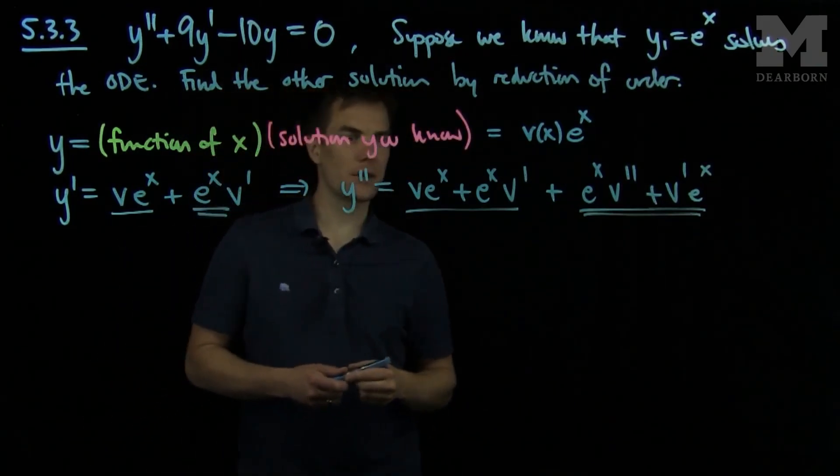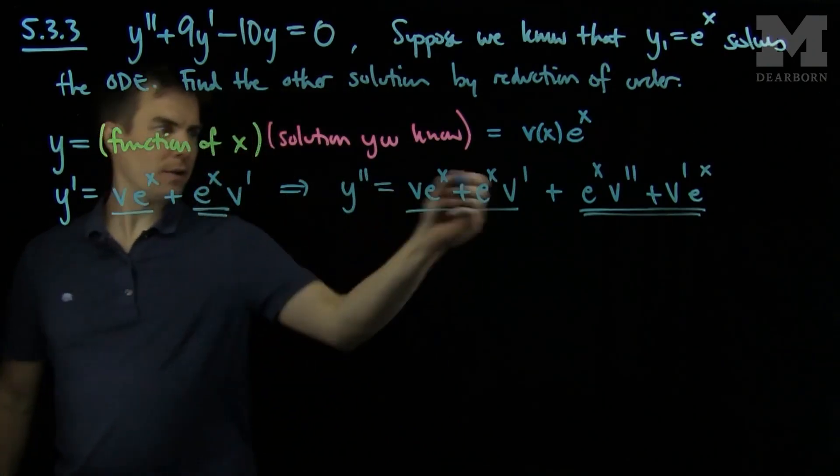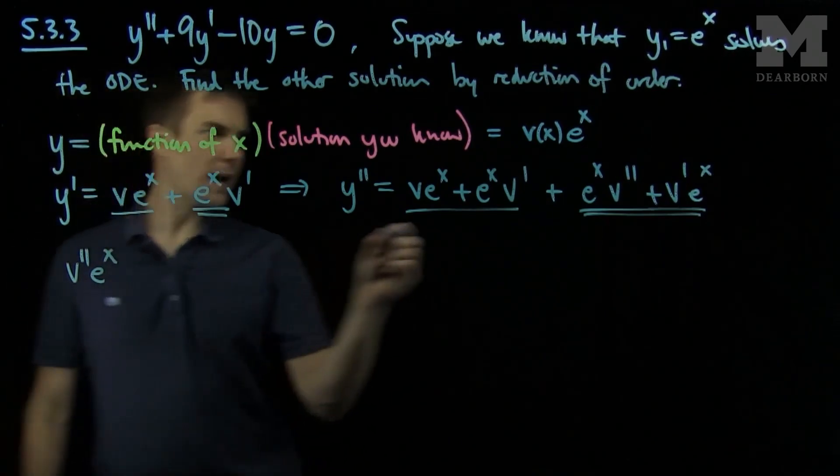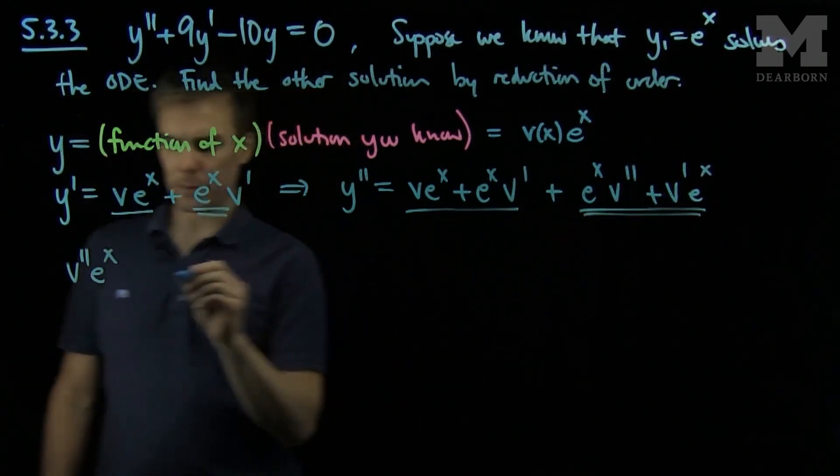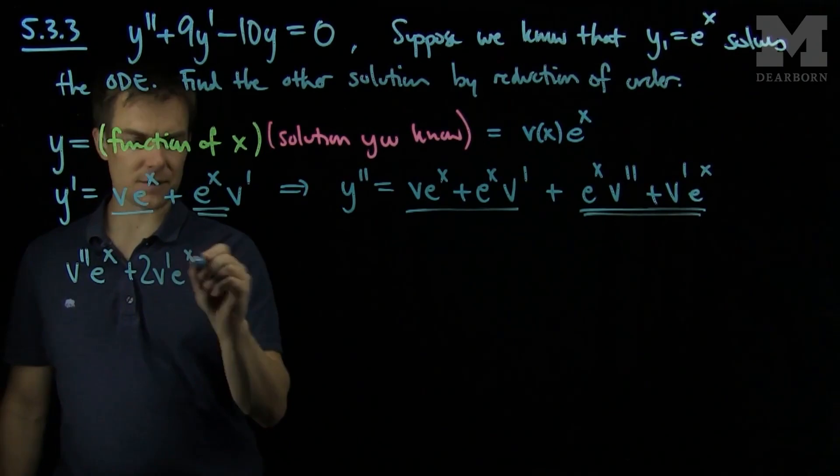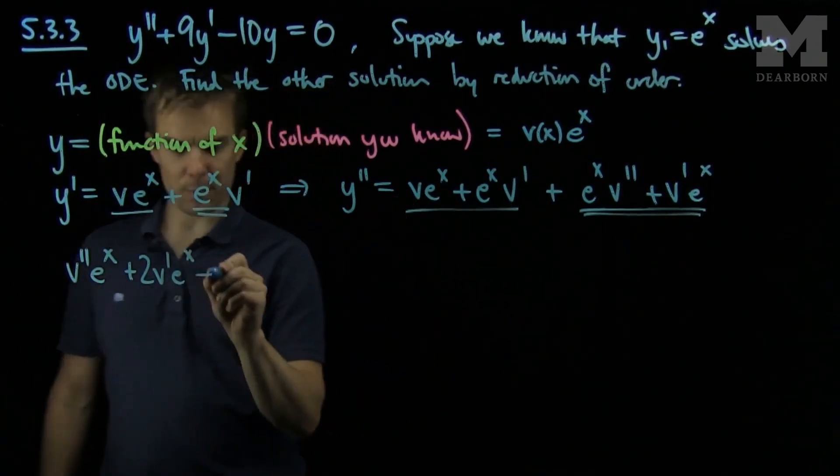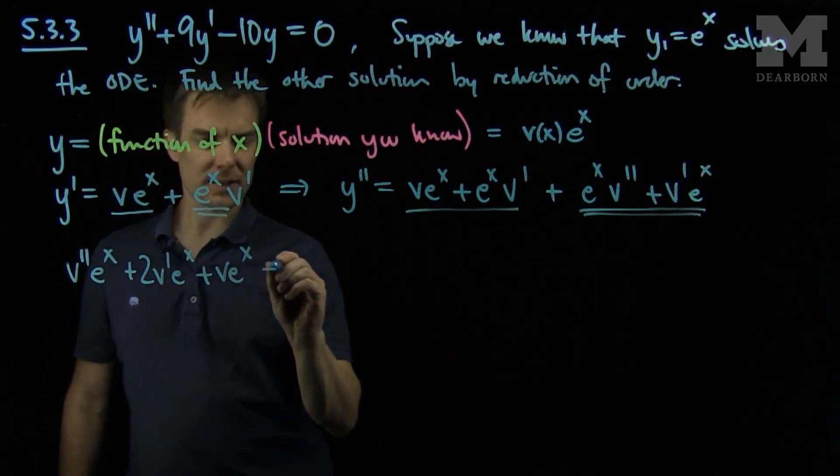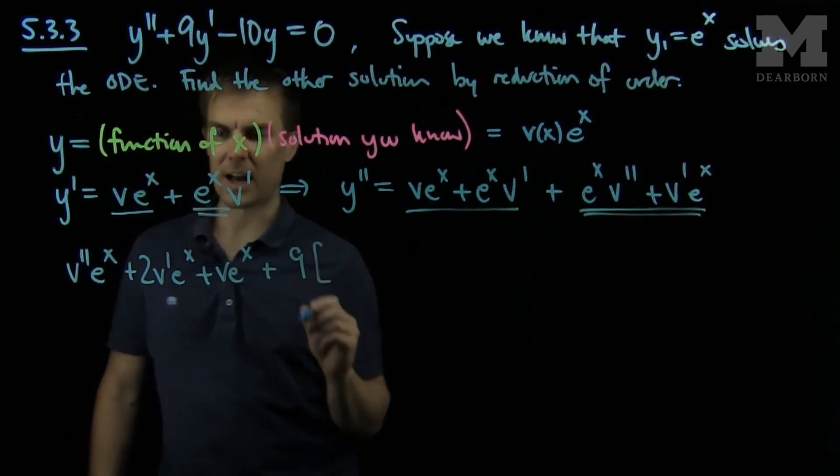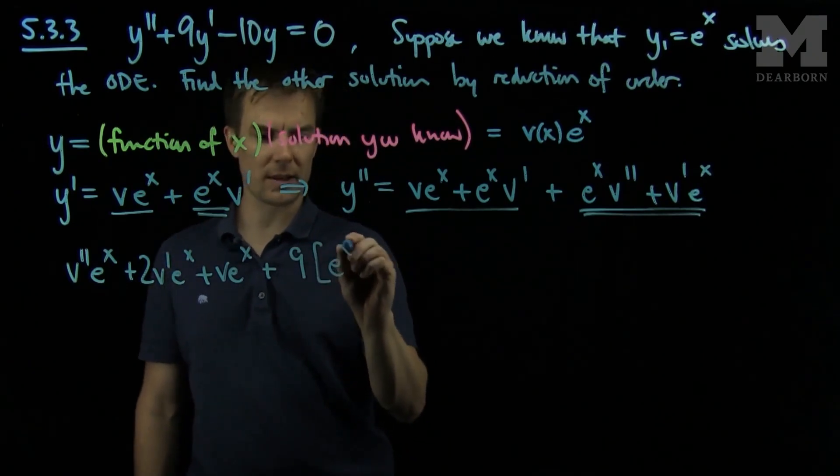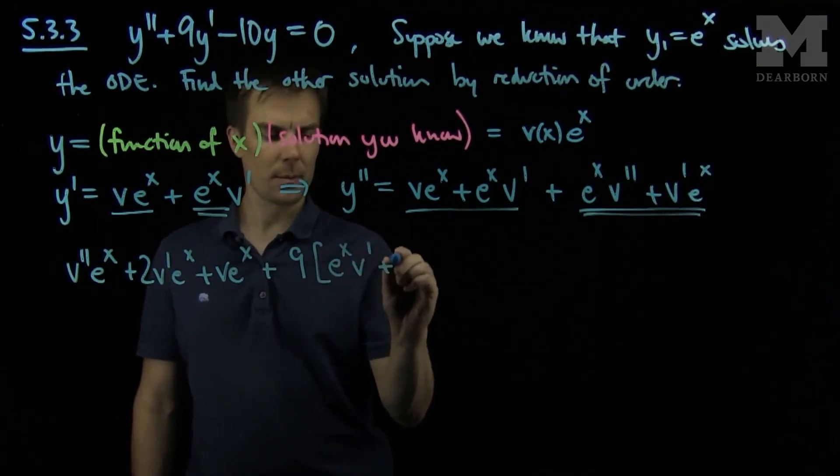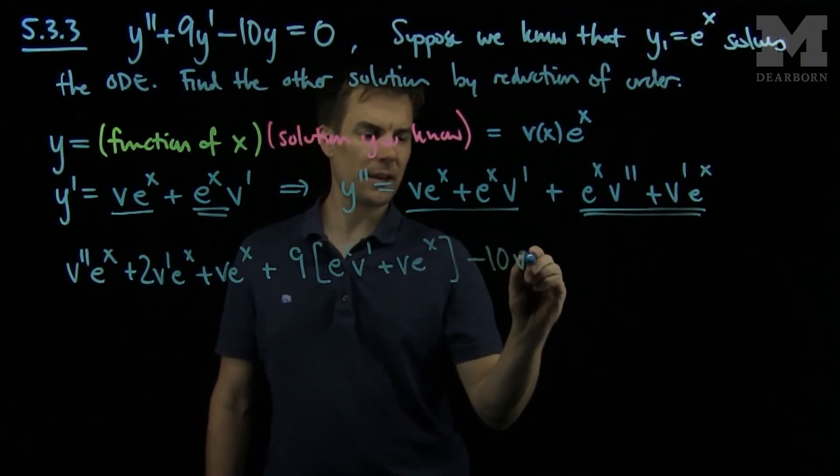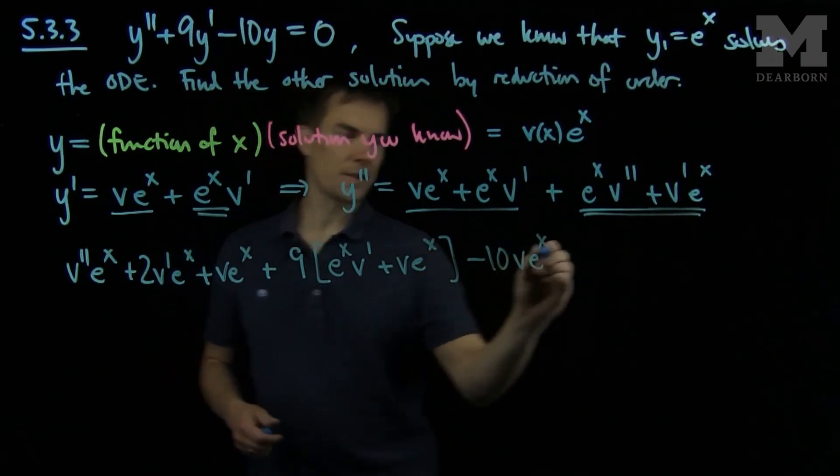And now we plug it back into the equation so the second derivative is this entire expression which we can simplify to v double prime e to the x, then I will have 2 v prime e to the x and a v e to the x. That's my second derivative term. Then plus 9 times the first derivative which is going to be v prime e to the x plus v e to the x, minus 10 v e to the x, and we set this equal to 0.